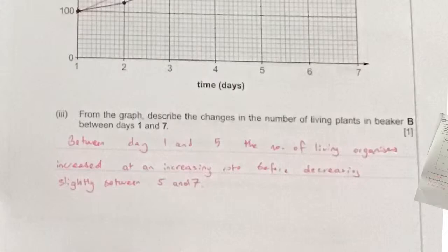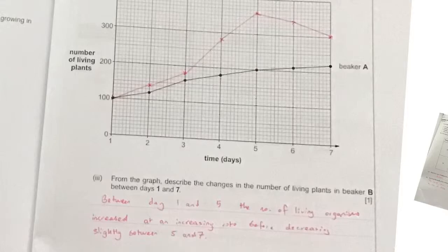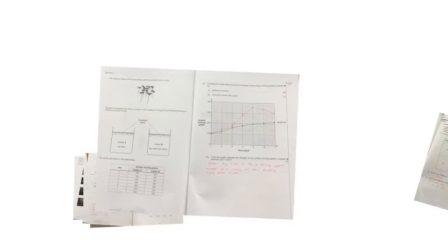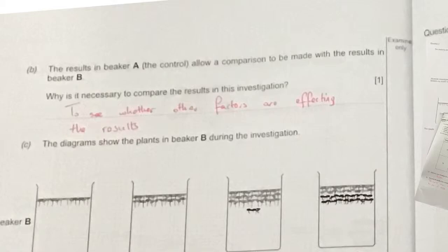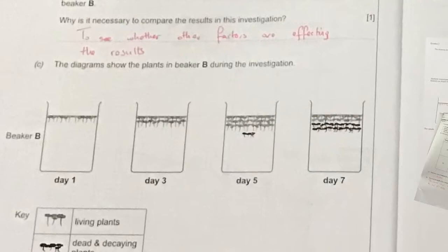From the graph, describe the changes in the number of plants. Between day one and five the number goes up at an increasing rate because the graph gets steeper, and then between day five and seven it decreases slightly. The results in beaker A, the control, allow a comparison to be made. We need to compare to ensure that the only thing affecting the plants is the nitrate.